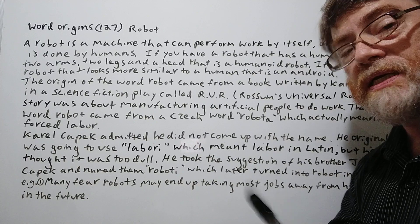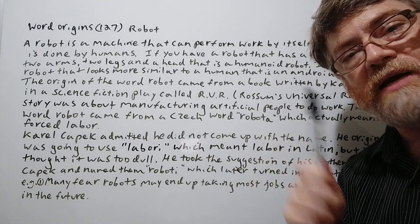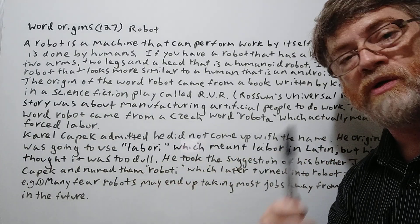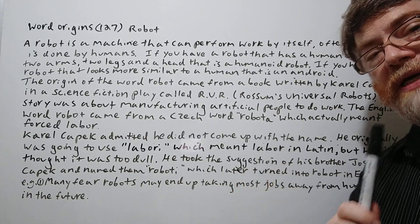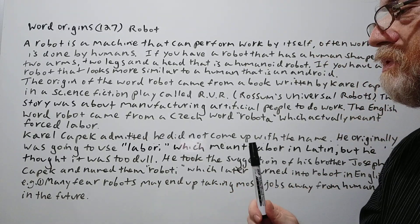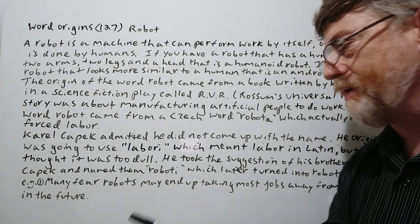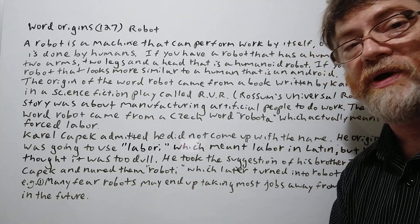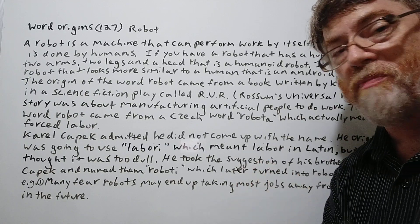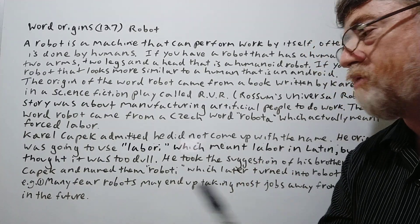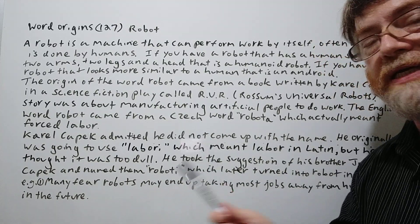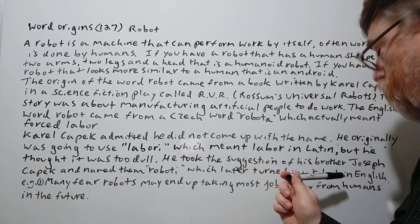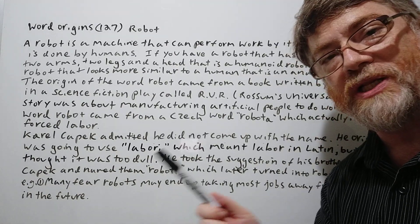Karel Čapek admitted he didn't come up with the name himself. He originally was going to use the word labori, which meant labor in Latin, but he thought it was too dull — kind of boring. He took the suggestion of his brother Joseph Čapek. So Joseph Čapek is the one who actually came up with the word robot, naming them roboti — probably the plural form — which later turned into robot in English.